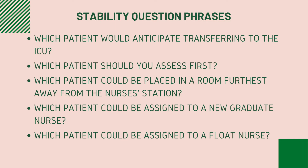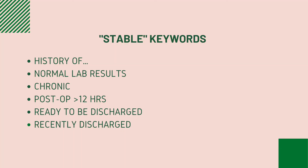There are multiple keywords and phrases that can clue you into questions where you will need to determine the patient's stability — like what patient could be assigned to a new graduate nurse, or which patient could be assigned to a float nurse. To help you determine who is the most stable, be on the lookout for keywords like 'history of,' normal lab results, and post-op greater than 12 hours. Remember that signs and symptoms pertaining to the patient's condition or disease process aren't necessarily bad. Ask yourself: is my patient experiencing what I would expect them to given their current disease process or condition?